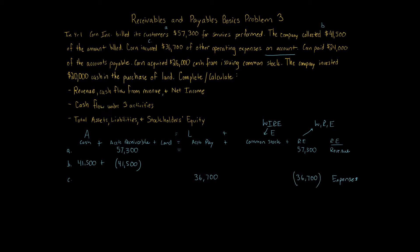Transaction D: Korn paid $24,000 of the accounts payable. Cash goes down by $24,000, and accounts payable goes down by $24,000 because it's no longer owed.